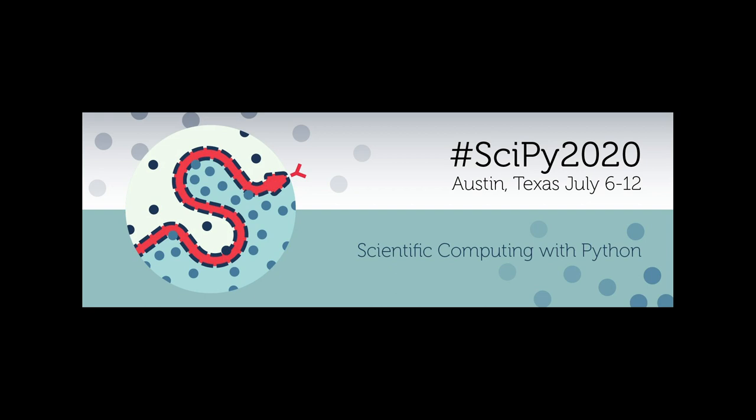SciPy 2020, the 19th annual Scientific Computing with Python conference, is a virtual conference being held July 6th through 12th, 2020. The annual SciPy conference brings together over 900 participants from industry, academia, and government to showcase their latest projects, learn from skilled users and developers, and collaborate on code development. The full program consists of five days of tutorials and talks, July 6th through 10th, and two days of developer sprints, July 11th and 12th.